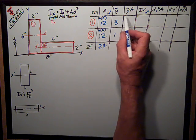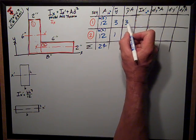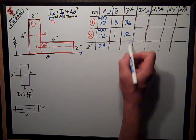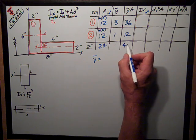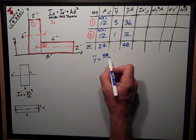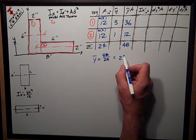Now I multiply the y tilde column times the area, and for segment 1 I get 36, for segment 2 I get 12. And now just like we've been doing, I can get y-bar, sum those up, y-bar is 48 over 24, or 2 inches.